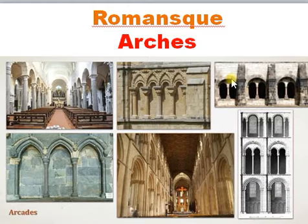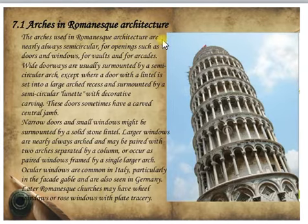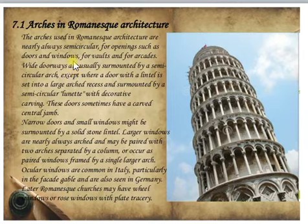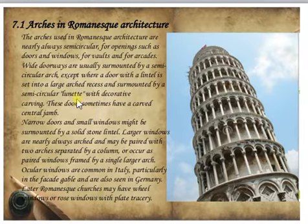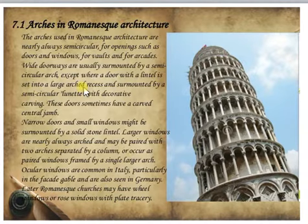An arch consists of different components. In Romanesque architecture, the arches used are nearly always semicircular, used for openings such as doors and windows, for walls, and for arcades. Wide doorways are usually surrounded by a semicircular arch, except where a door with a lintel is set into a larger arch.